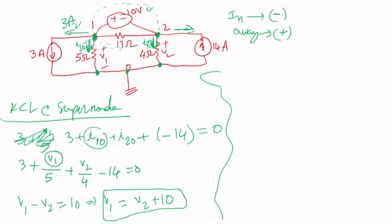So basically what I would have is 3, if I go back to this equation here. So 3 plus V1, which is just V2 plus 10 divided by 5 plus V2 divided by 4 minus 14 equal to 0.